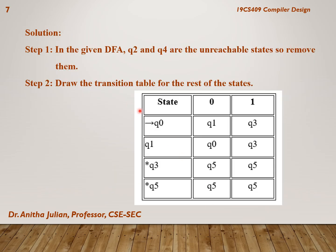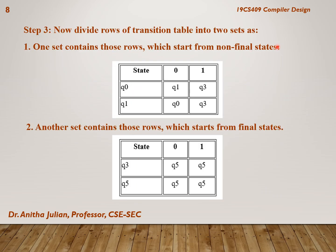Once we remove those unreachable states, we draw the transition table for the remaining states. From the transition diagram, Q3 and Q5 are final states, and Q0 is our initial state. That completes step 2. In step 3, we divide the table into two tables — non-final states and final states. Q0 and Q1 are non-final states (set T2), and Q3 and Q5 are final states (set T1). We group the non-final states together in one table and the final states in another.